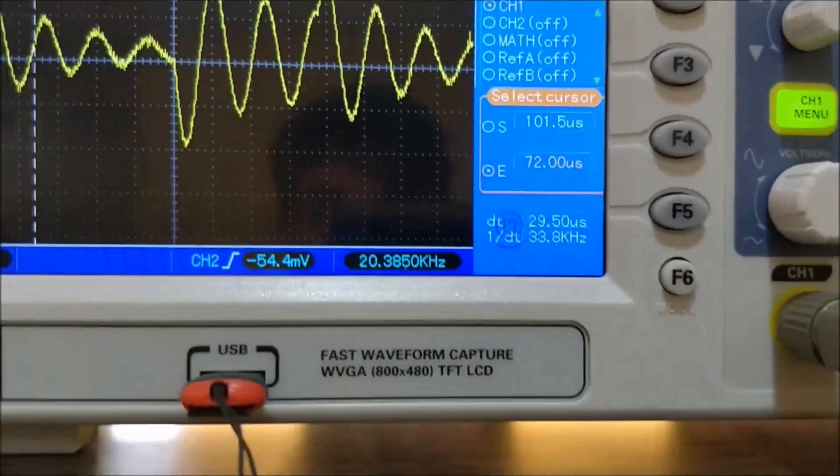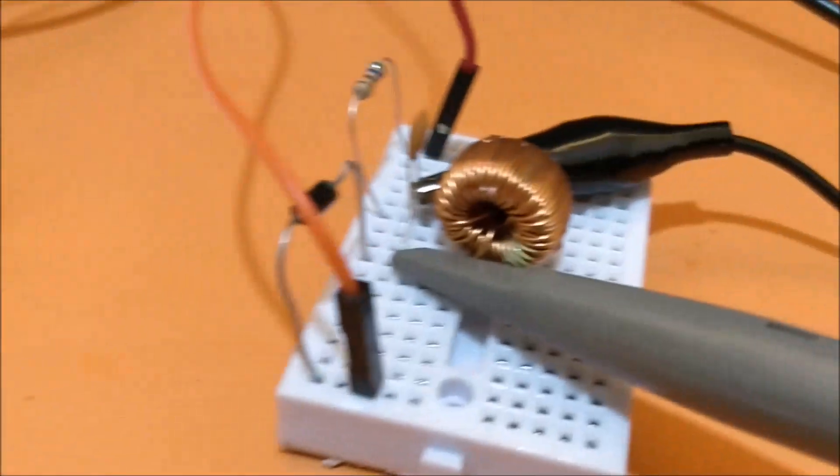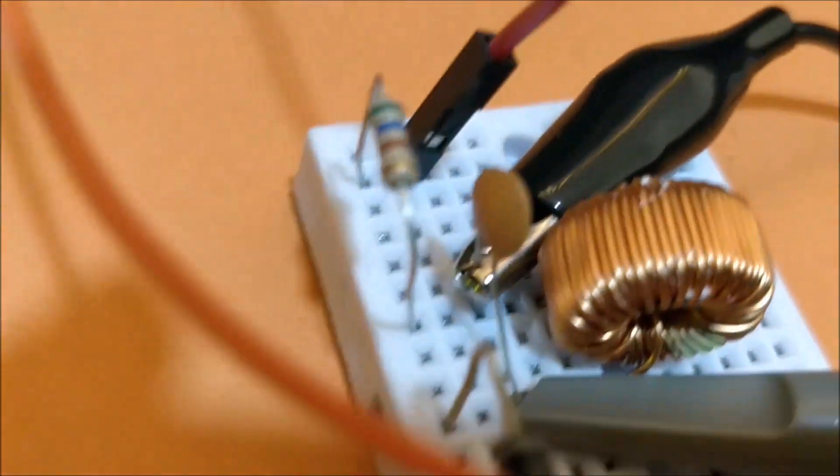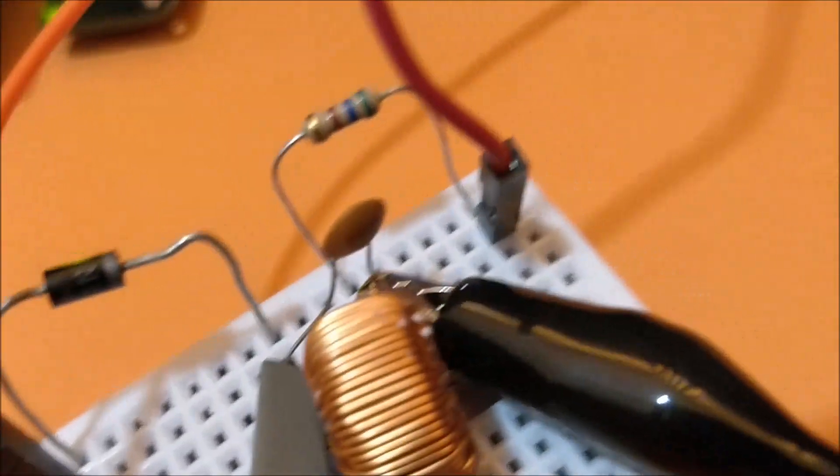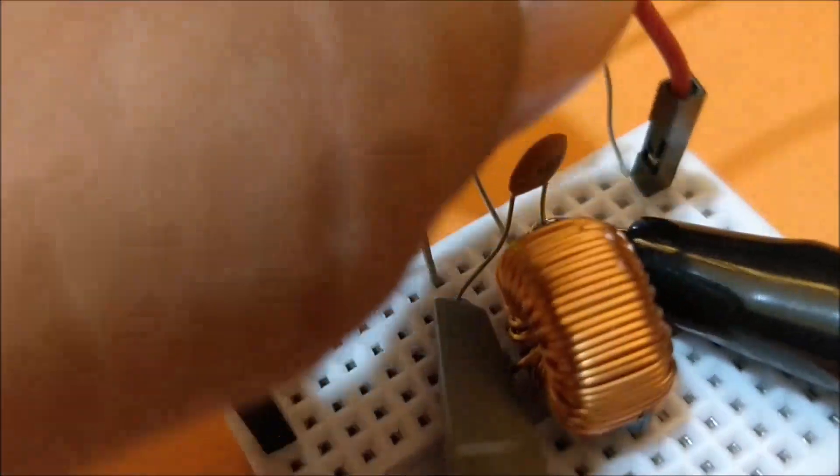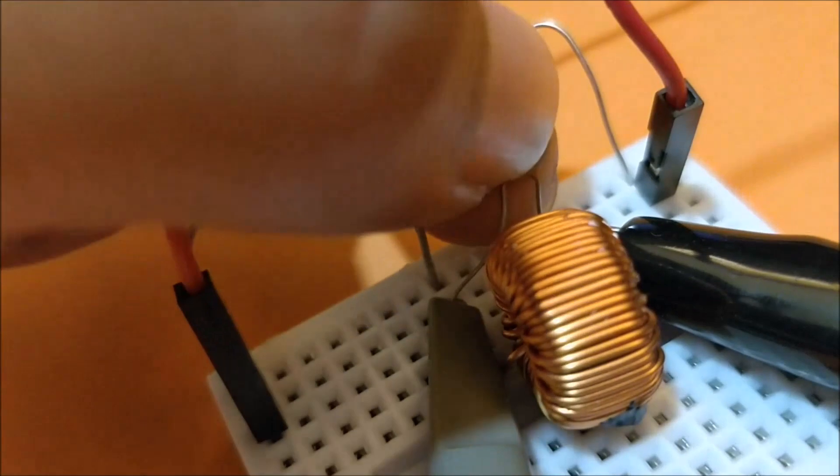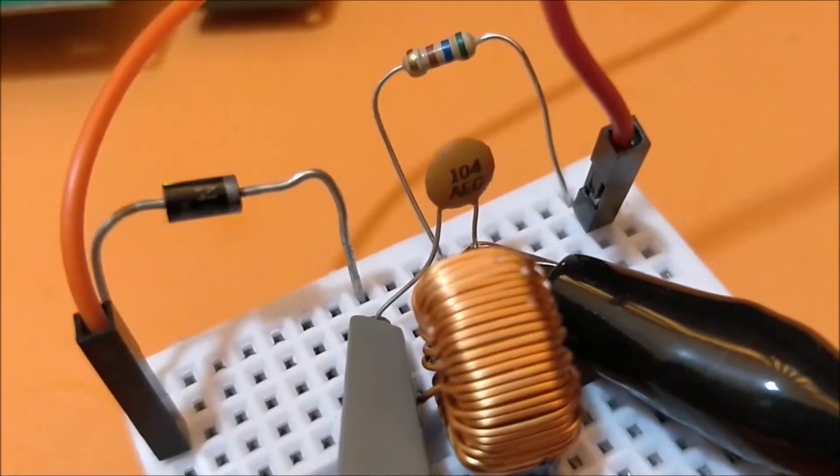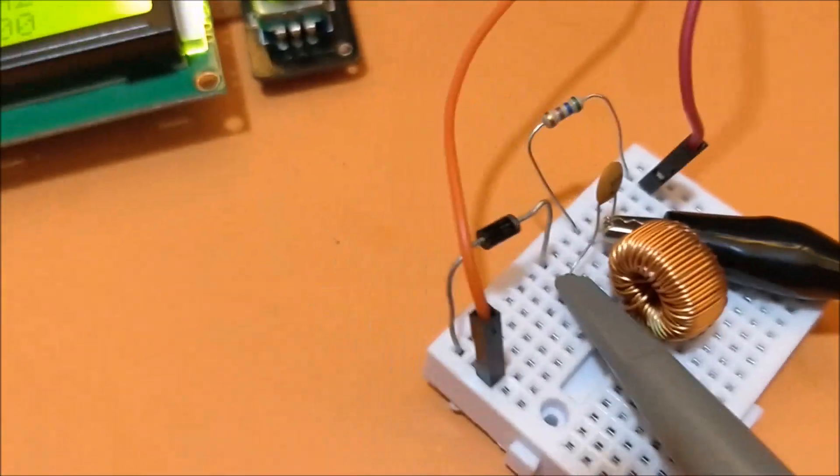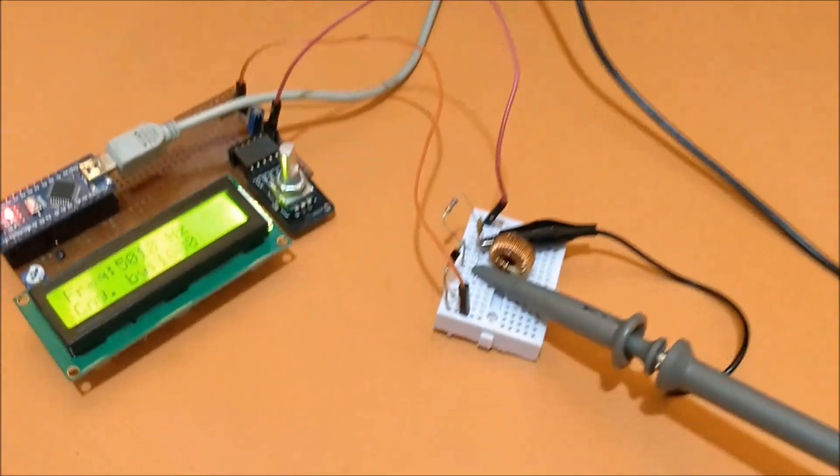So now this is the resonance frequency of the circuit. Now we know the resonance frequency, and we also know the value of capacitor used here. If you can see, it is 104, let me show that for you. The value of capacitor is 104, which is 0.1 microfarads.